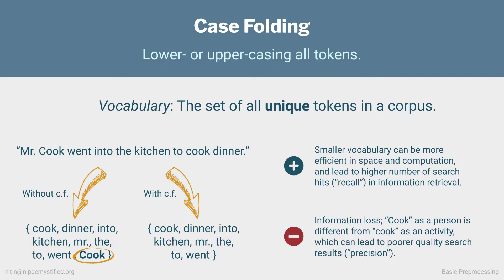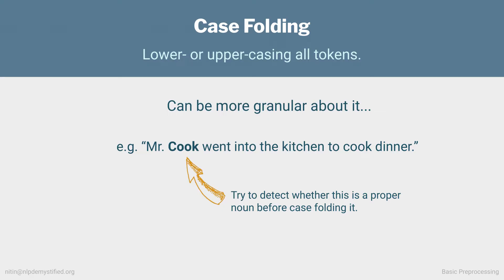Whether you choose to normalize the casing depends on your application, and this is something you're going to see over and over throughout NLP. You'll have your raw data on one end, your goal on the other, and your job is making the decisions and trade-offs in between. The straightforward strategy is to try multiple approaches and see what works best. For example, we could be more granular and skip case folding if a word is likely a proper noun. Sophisticated search engines typically use multiple rules and blend the results based on a number of factors. We'll see how to identify proper nouns in a future video.